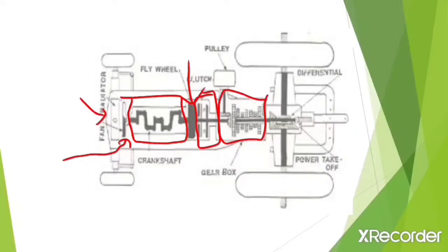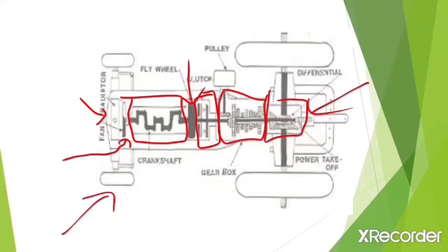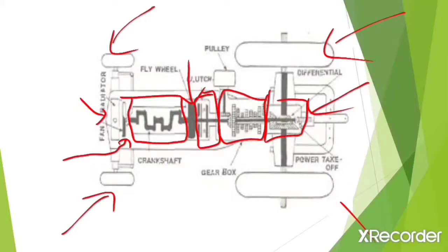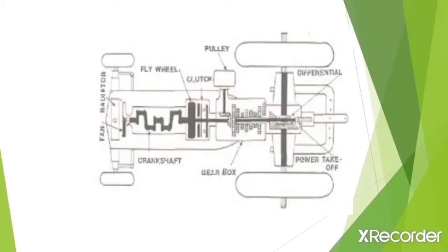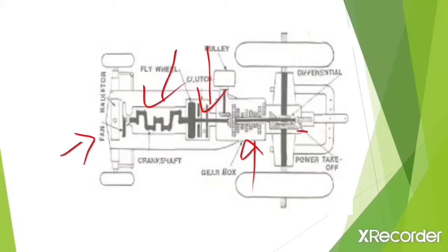After the gearbox, there is the differential unit, and here is the PTO shaft — the full form of PTO is Power Take-Off. Then these are the front wheels and these are the rear wheels. So, the sequence in the tractor is: first the cooling system, then the engine, then the clutch, then the gearbox, and the last unit is the differential unit.